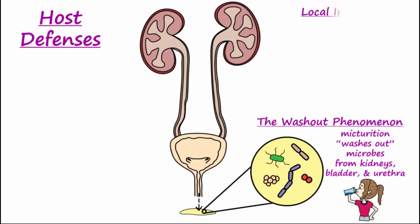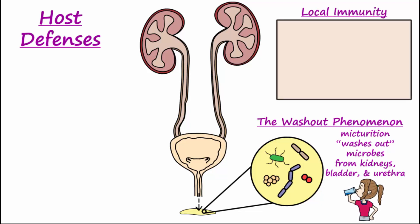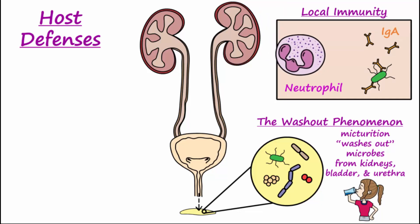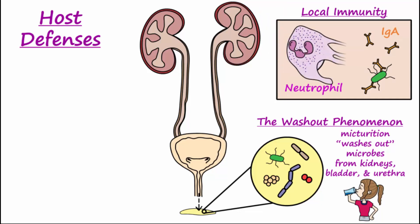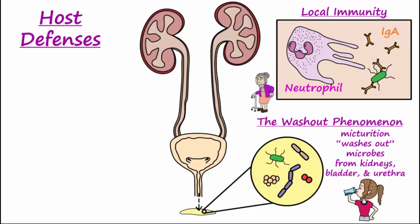Local immunity along the urinary tract includes secretory IgA and neutrophils that help remove troublesome bacteria known to cause UTIs. With age, immune activity decreases, contributing to the age-related increase in risk for a UTI.